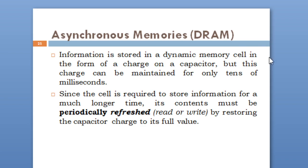Information is stored in a dynamic memory cell in the form of a charge on a capacitor, but this charge can be maintained for only tens of milliseconds. Since the cell is required to store information for a much longer time, its content must be periodically refreshed by restoring the capacitor charge to its full value. This is because the capacitor has a feature of voltage leakage — after some time it starts discharging, and when the charge reaches zero, that gives the logical value zero.